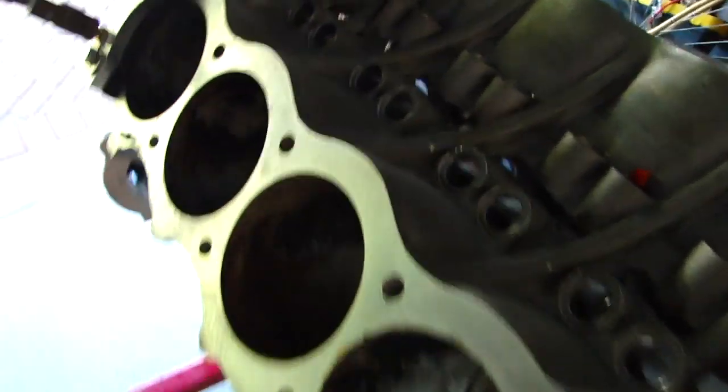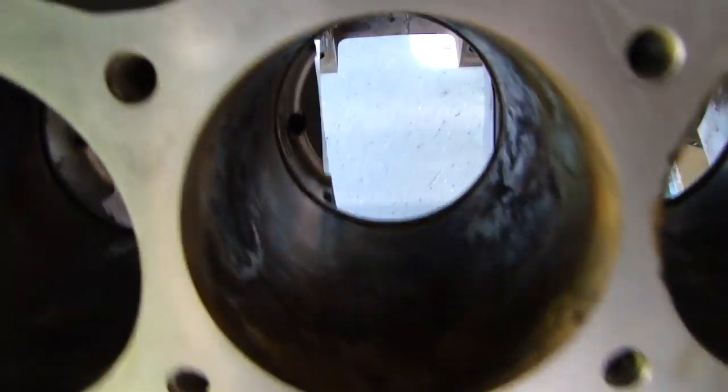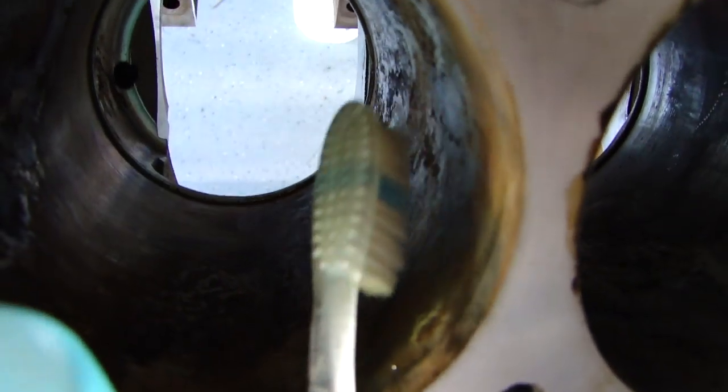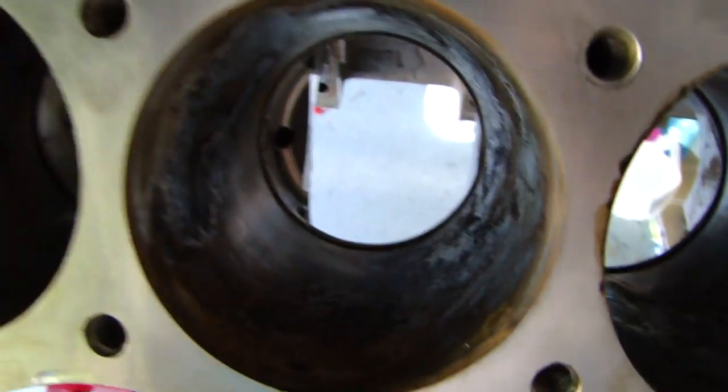Alright, I have the block pressurized to about 40 psi and it's losing because there's a big hole in cylinder number four in the wall.